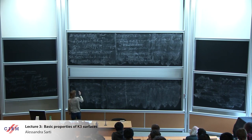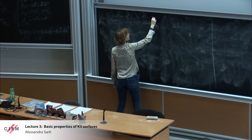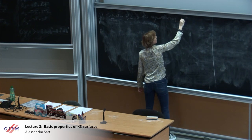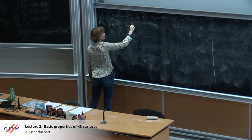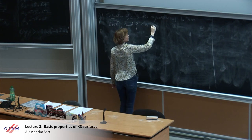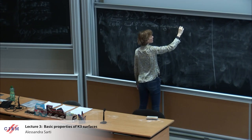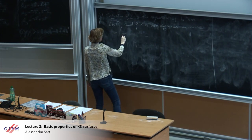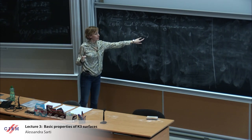The signature, of course, is the signature over R of L, which is the signature of B on L tensor R. If L is non-degenerate, we denote it by (S+, S-), where S+ counts the positive eigenvalues and S- the negative ones.